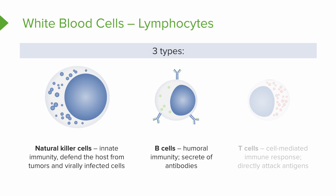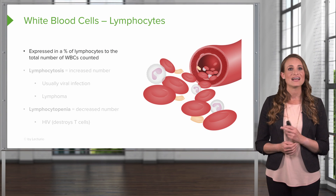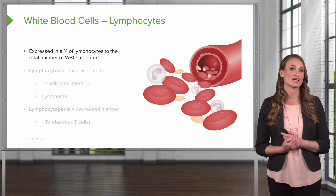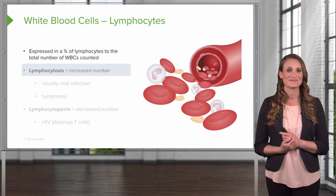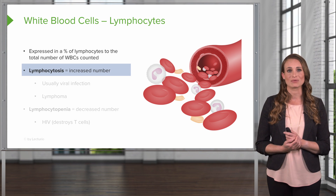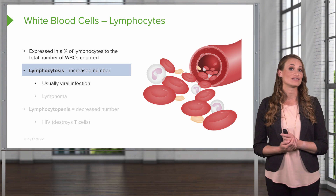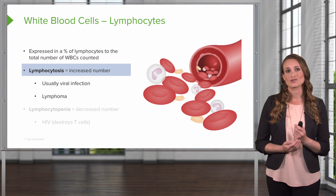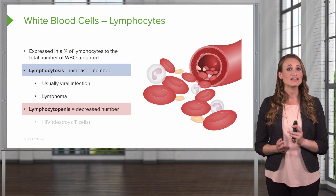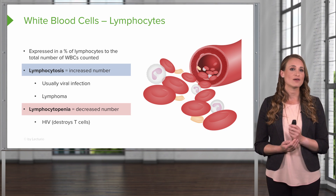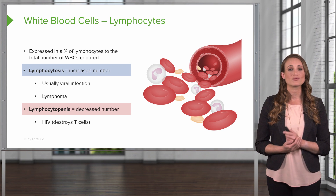Next are the B cells. These are part of the humoral immunity, and they're responsible for making large quantities of antibodies, which can neutralize foreign objects like bacteria and viruses. Last are the T cells. These are part of the cell-mediated immune response, and these are going to directly attack antigens. Lymphocytes are expressed as a percentage compared to the total number of white blood cells counted. Lymphocytosis refers to an increased number, usually in the setting of a viral infection, certain kinds of blood cancers, or lymphoma. Lymphocytopenia refers to a decreased number, and we see this in patients with HIV because it destroys their T cells.